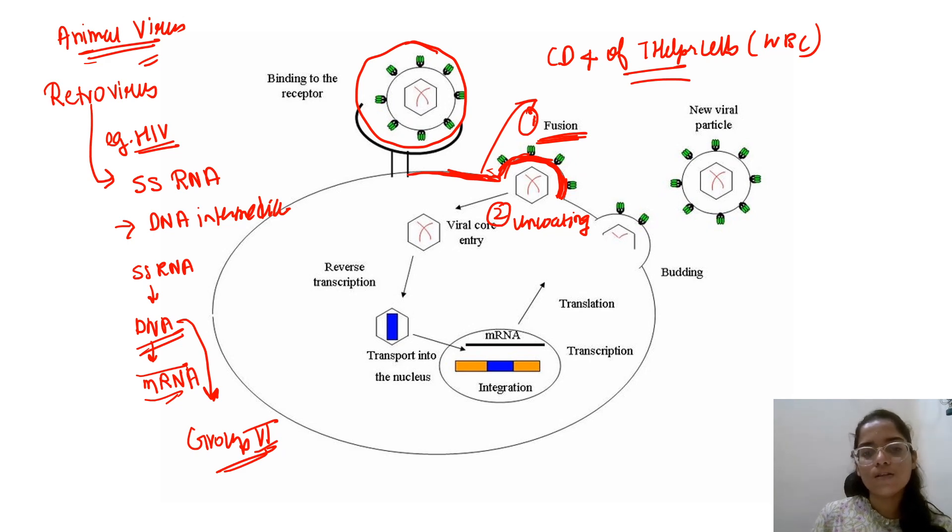After uncoating, the viral core will be entered into the cell. Genetic materials, enzymes, reverse transcriptase are entered into the animal cell. Reverse transcriptase will be transported into the nucleus. The DNA will be transferred into the DNA.